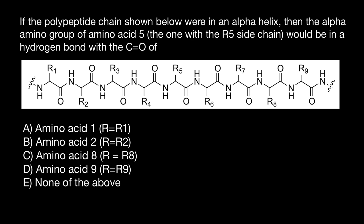If you remember, the formula is going to be i plus four, which means that hydrogen bonds would be between amino acids. We can put any number here — for example, number one, then plus four, it's going to be with amino acid number five. So one bonds with five. According to our problem, we are talking about amino acid number five, and this is going to be the amino end of this amino acid, and this is going to be the carboxylic end of this amino acid.